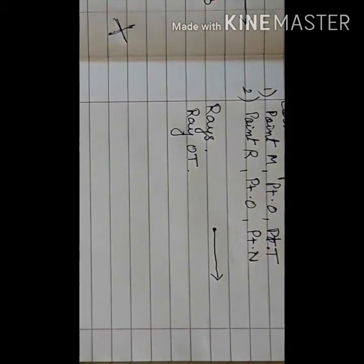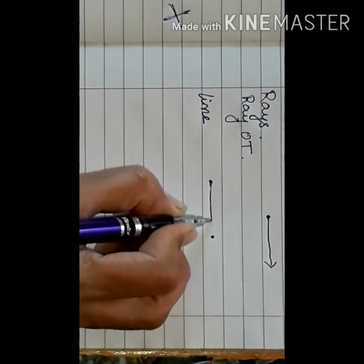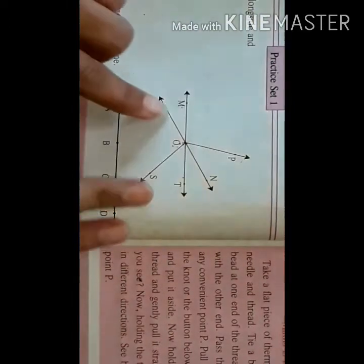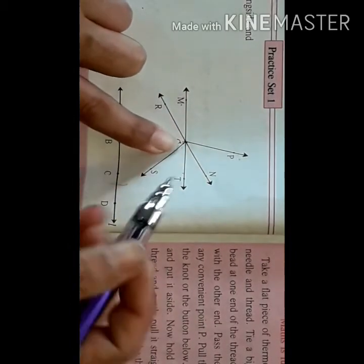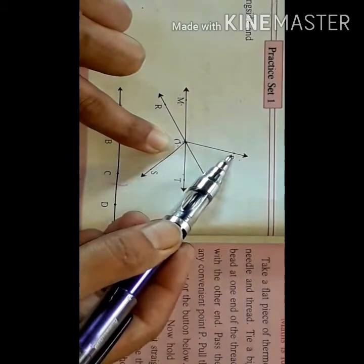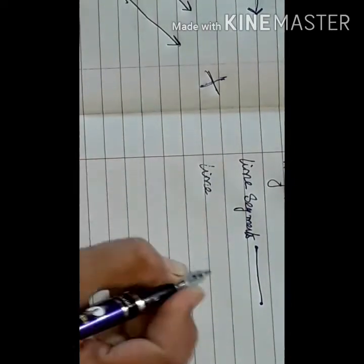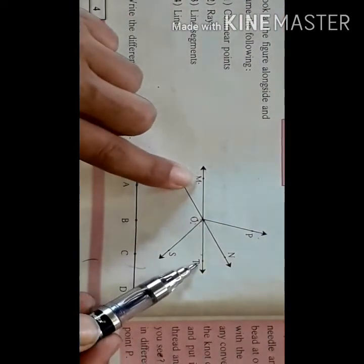Now, what are line segments? A line segment has both a start point and an end point. In this figure, the line segments are: segment MT, segment RN, segment OS, segment ON, and segment OP. Lines are denoted by arrows on both sides — so only two lines are there: line MT and line RN.